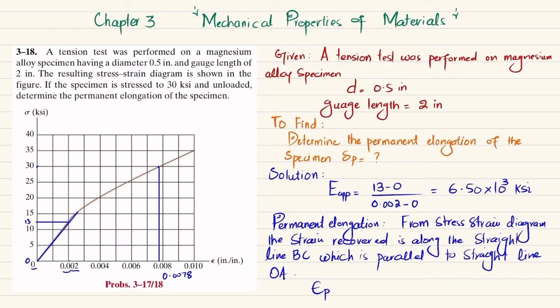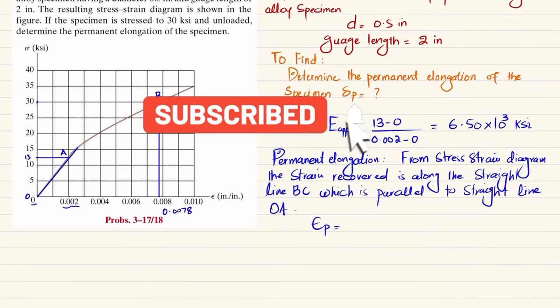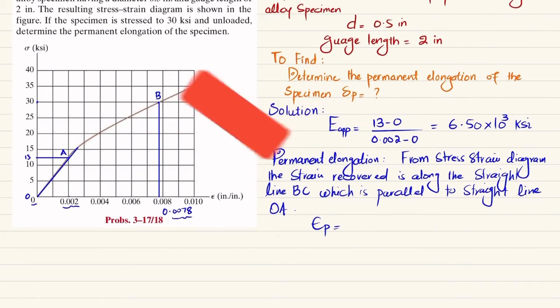Let this be point O, this is A, and this is B. The permanent deformation will be equal to—you can see at point B we have 0.0078, which is the total strain.